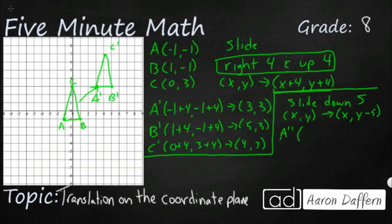So that's going to be my x, which is negative 1. And then that's going to be negative 1 minus 5. So that's going to turn into negative 1, negative 6. So I'm just going to slide it down here. A is going to be negative 1, negative 6. A double prime.